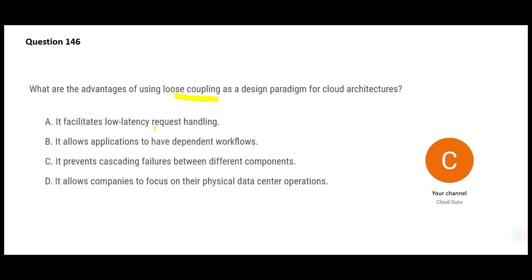Option A says loose coupling means low latency request handling — it has nothing to do with speed of network. Even if one person works super fast, they can still fall sick and cripple you. Option B says it allows applications to have dependent workflows — that's actually the opposite. You should have independent workflows instead of one person being a bottleneck. So B is wrong.